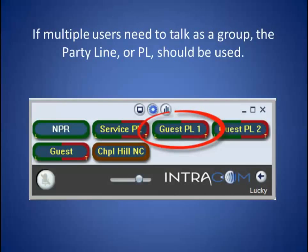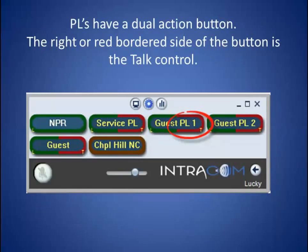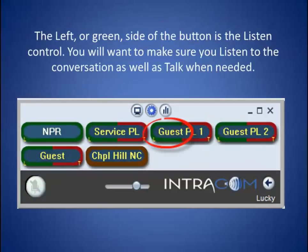If multiple users need to talk as a group, the party line or PL should be used. PLs have a dual action button. The right or red-bordered side of the button is the talk control. The left or green side of the button is the listen control. You will want to make sure you listen to the conversation as well as talk when needed.